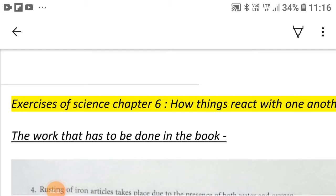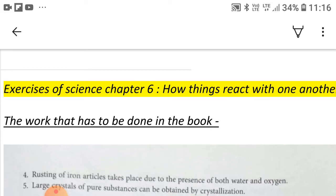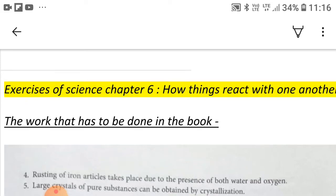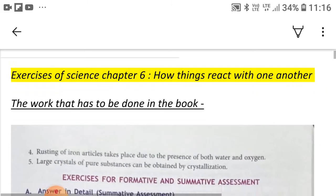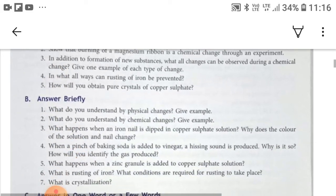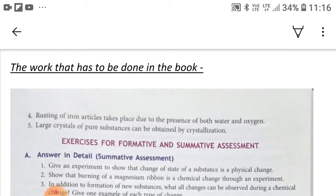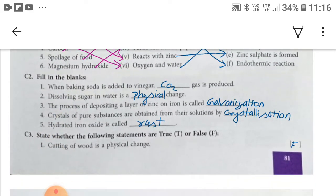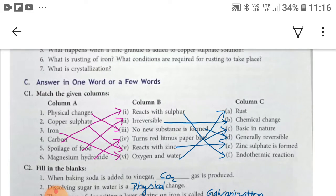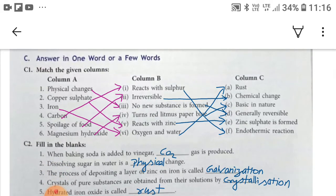Good morning class seven, today we are going to complete exercises of science chapter six, how things react with one another. So here you can see exercises for formative and summative assessment on page number eighty-one. On this page number you can see the C part, answer in one word or a few words, in it C1 match the given columns.